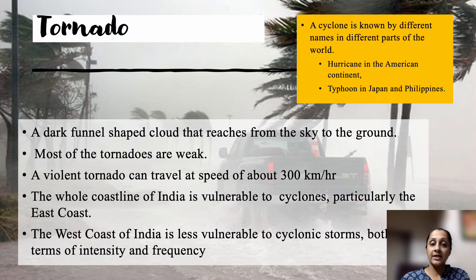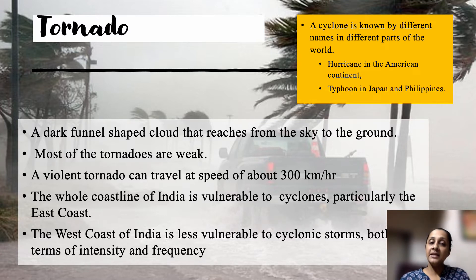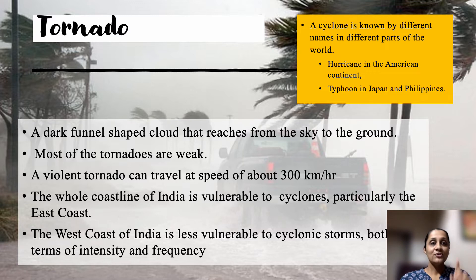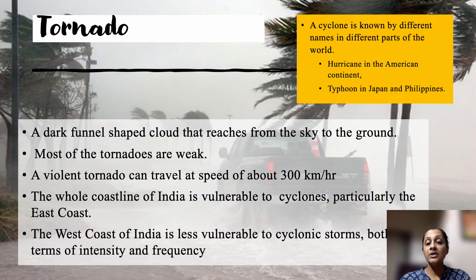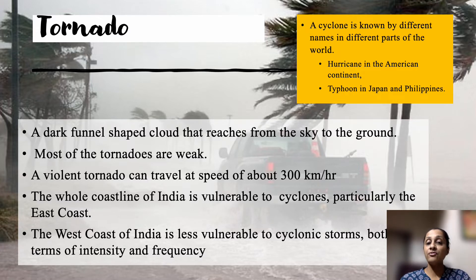A tornado is actually a product of a cyclone — it comes from the cyclone. From a huge cyclone, small tornadoes can separate due to low pressure and high wind speed and spread into nearby areas. A tornado is a dark, funnel-shaped cloud that reaches from the sky to the ground. They are generally weak, but the very violent and strong ones can have a speed of 300 kilometers per hour — higher than the cyclone's typical 150 to 250 kilometers per hour.